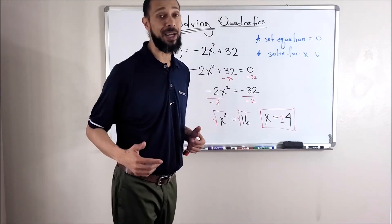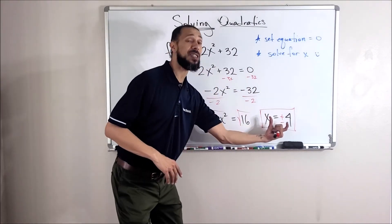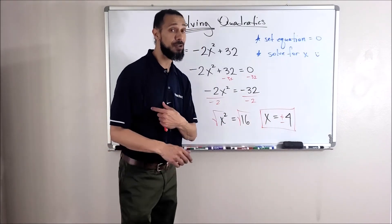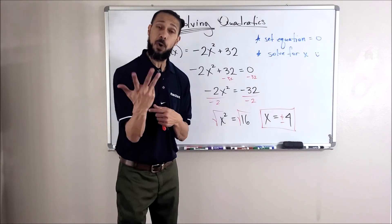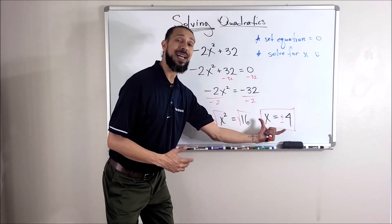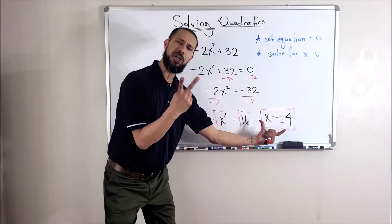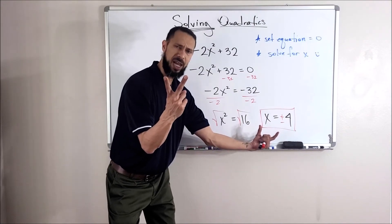Remember, you're in algebra now. Those days are over. You got to always account for the negative possibility also. So every time you take the square root, always with the plus or minus. And it's for a reason. This graph is going to cross the x-axis twice.